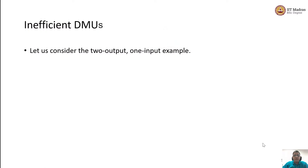Welcome back to a new session on Data Envelopment Analysis. In the last session, we had seen how to deal with inefficient DMUs, how to tell them how they should become efficient, and in general what is the method of bringing them to the efficiency envelope. The example we had seen had two inputs and one output. Now let us take the reverse case where we have two outputs and one input.